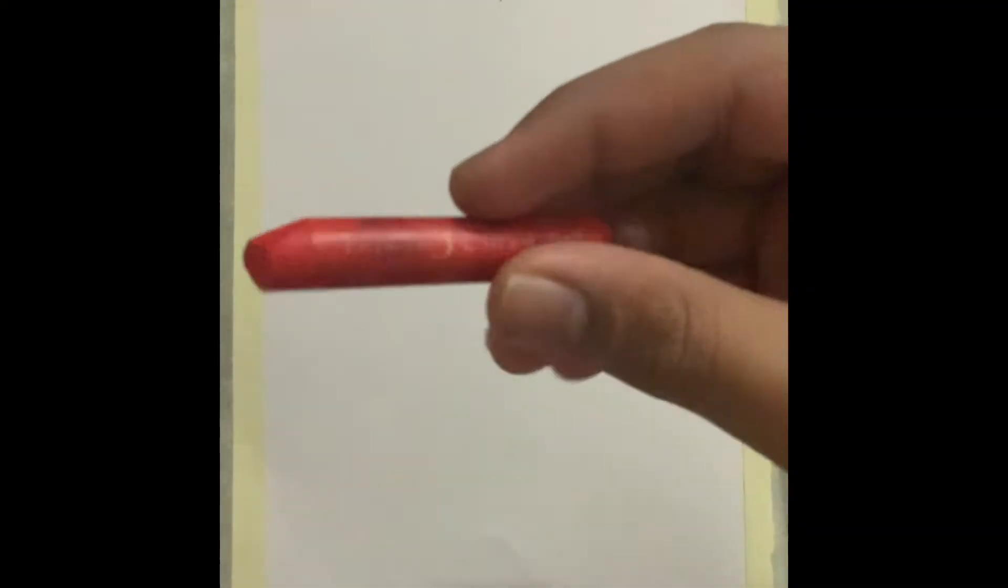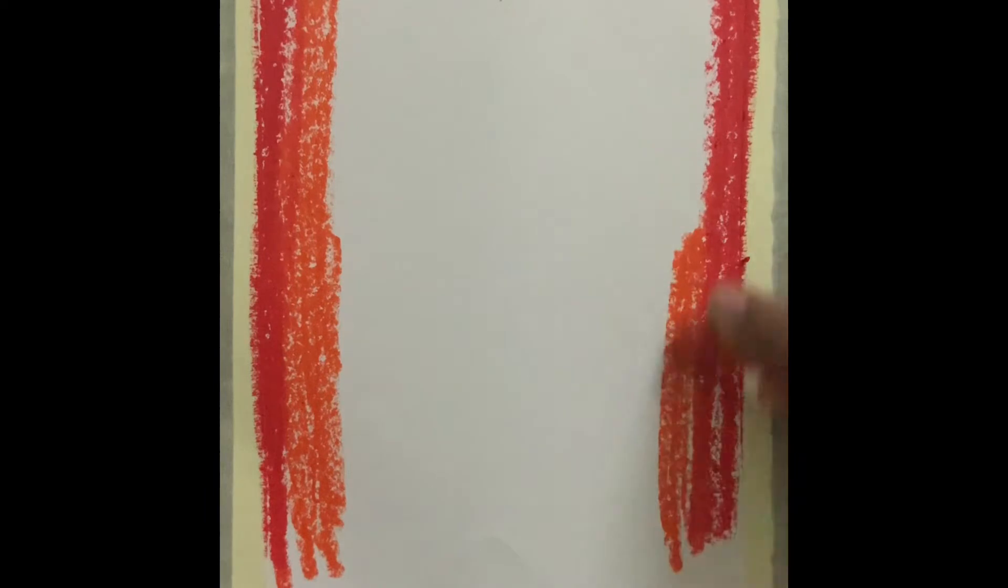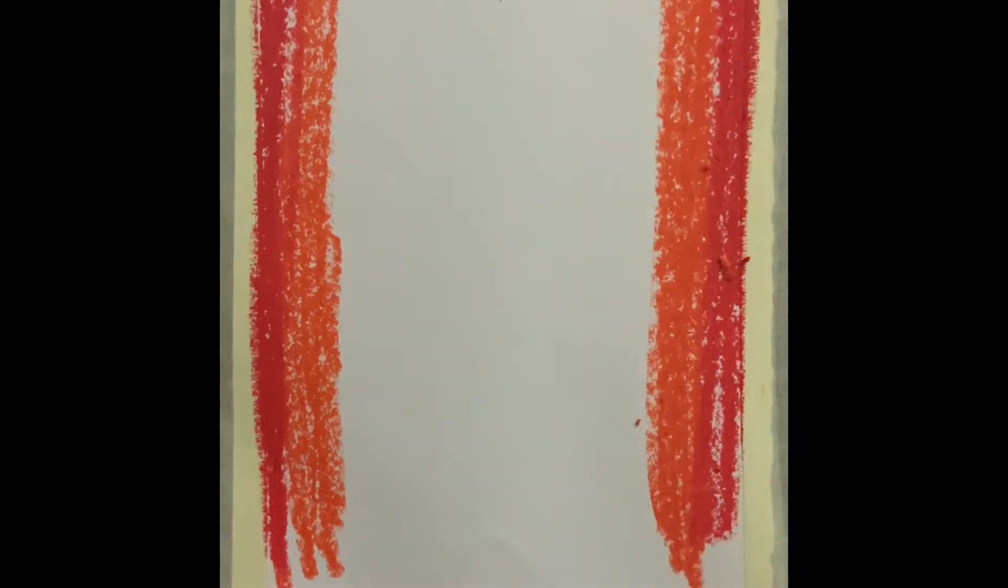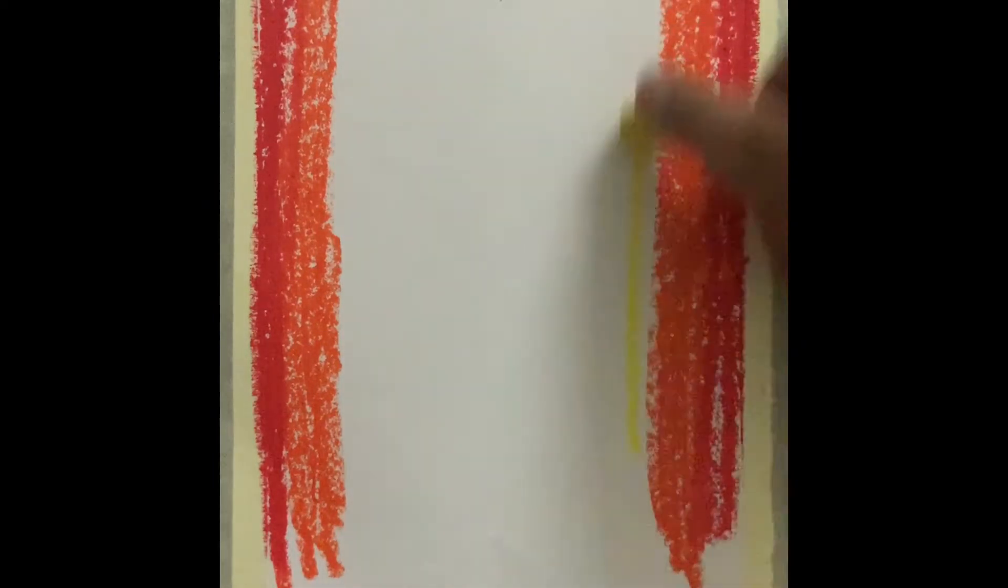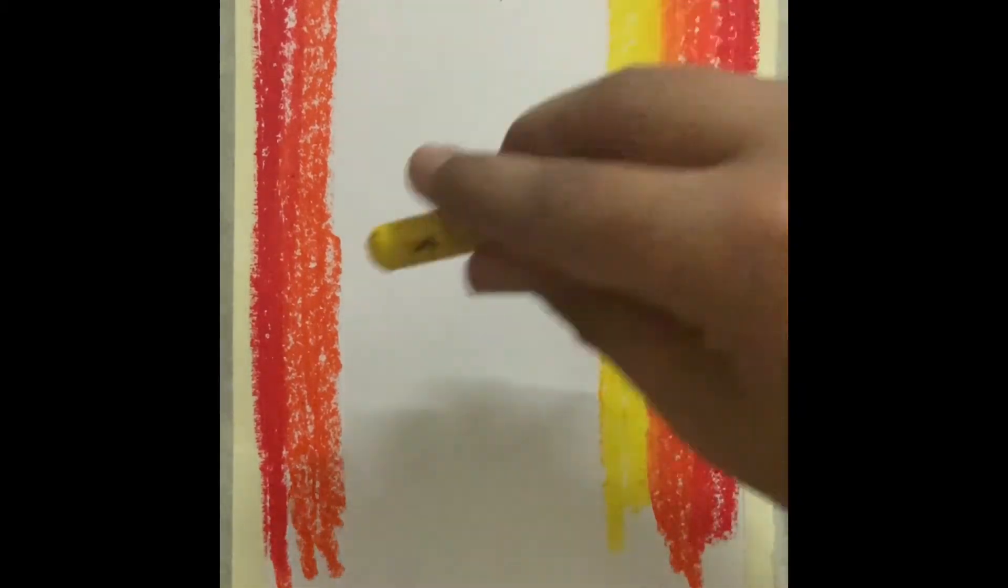Let's get started. This red, primary red or normal red, we'll do on the borders. And then now orange, orange. Okay. After orange, we'll take normal yellow, normal yellow, not lemon.